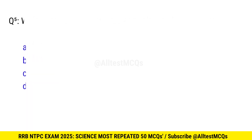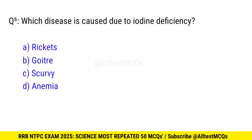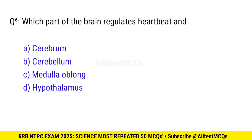Question 5. Which disease is caused due to iodine deficiency? Right option is B, goiter.